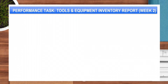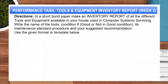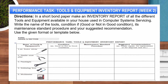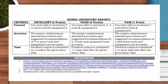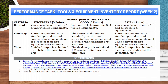Performance Task — Tools and Equipment Inventory Report. Direction: On a short bond paper, make an inventory report of all the different tools and equipment available in your house that are used in Computer System Servicing. Write the name of the tools, their condition (good or not in good condition), their maintenance standard procedure, and your suggested recommendation. Use the given format or template below. You will be graded using this inventory report rubric.